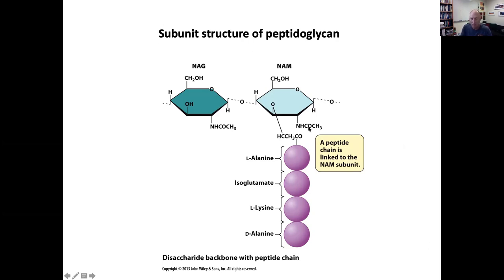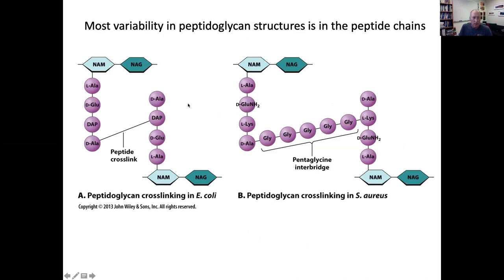This is the basic subunit of peptidoglycan. Comparing E. coli versus Staph aureus, we have different amino acids in the peptide cross-linker. In E. coli, the peptide linkage between the two side chains is direct, whereas in Staph aureus there is an extended interbridge structure — an additional set of amino acids, all glycine in this case, connecting the chains. Different bacteria will differ in the nature of the peptides and the cross-linking structure.